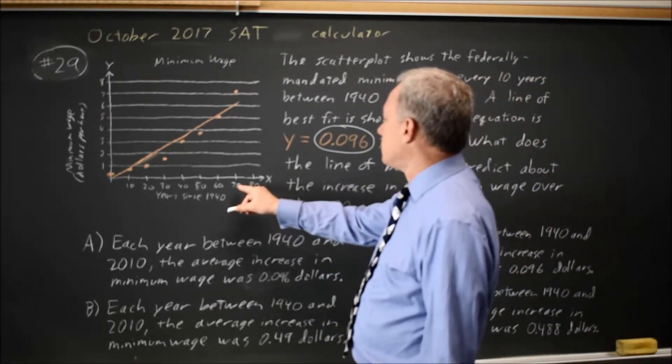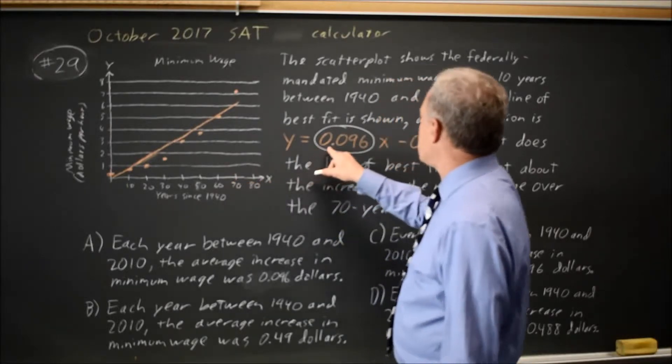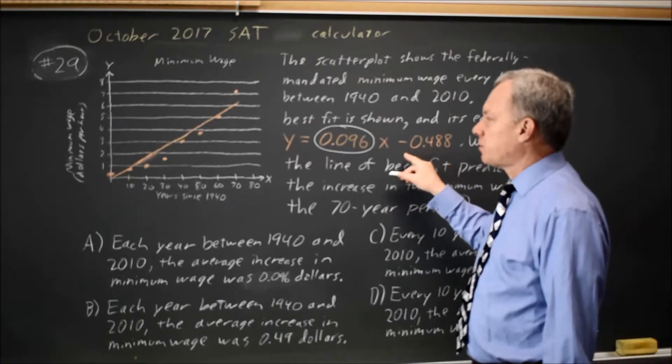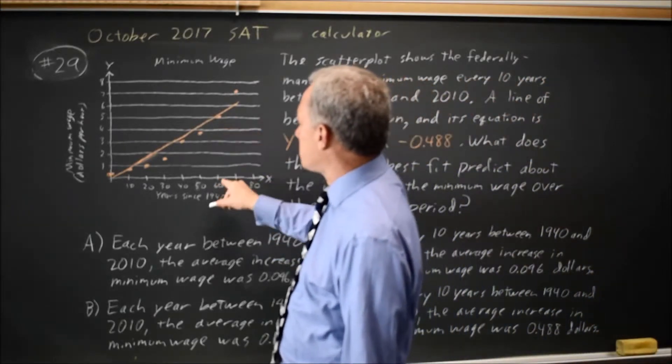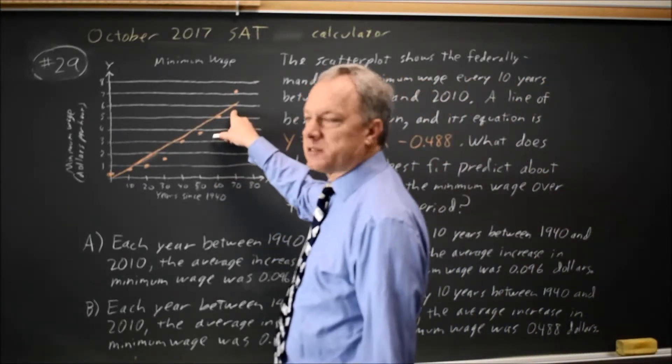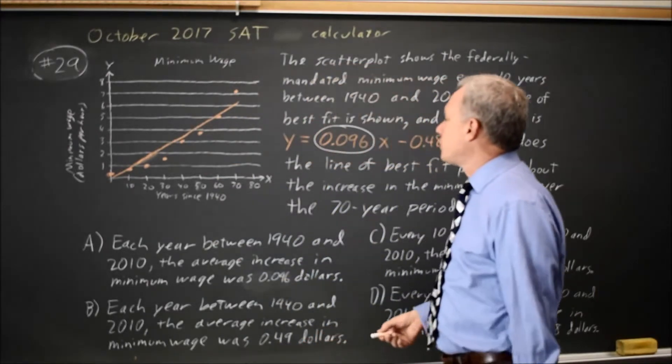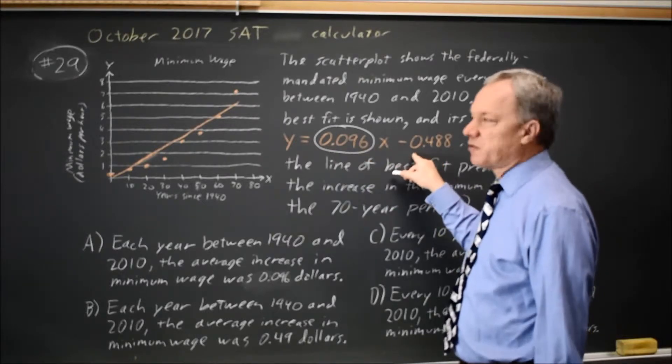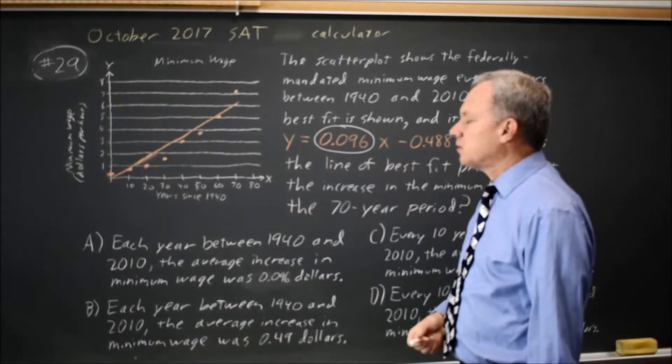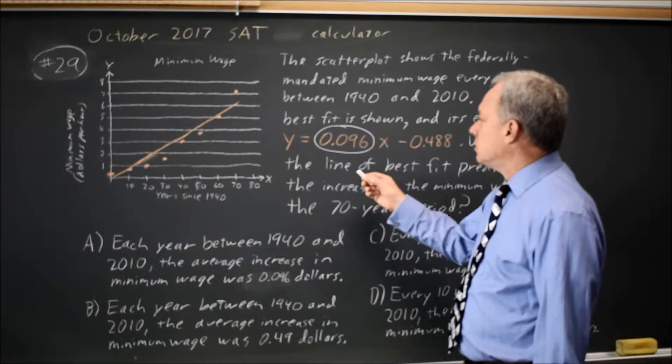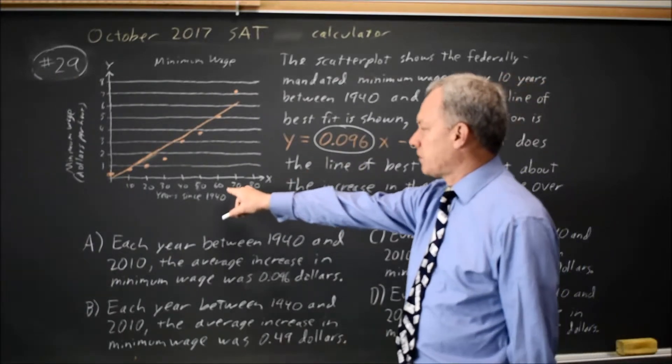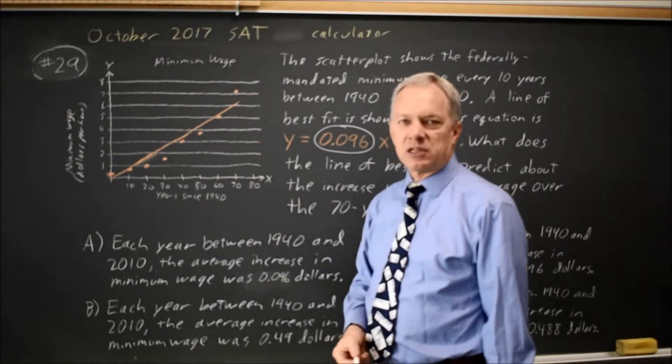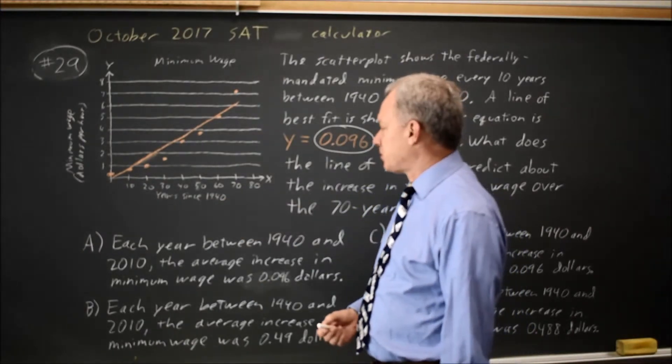Also, if you put in x equals 7, that will give you basically .7 minus .5 is about .2 for minimum wage when the actual minimum wage is just below 6. If you put in x equals 70, that will give you basically 7 minus .5 is about 6.5, which is pretty close. So you can confirm either from the labels on the graph, or from substituting in a large value like 70, whether x is years or decades.